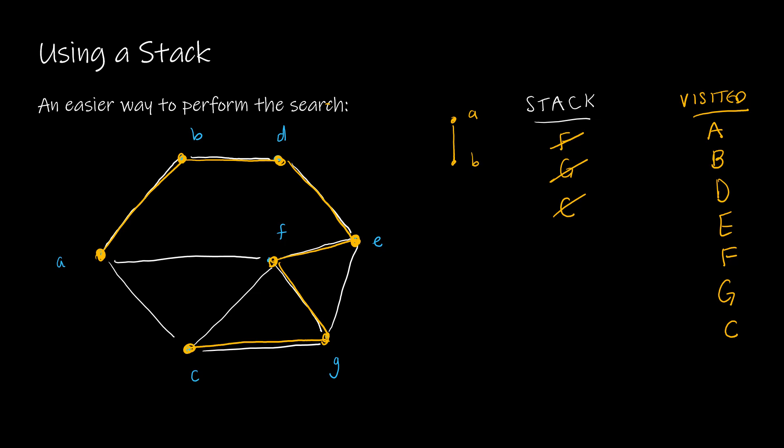Well, it's just a path. A, B, D, E, F, G, C. So that is what my spanning tree would look like in this case, starting from A and making the decisions that I did.